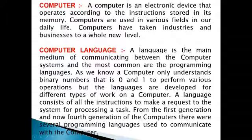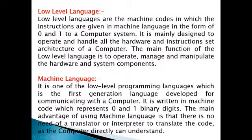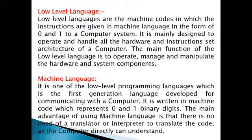From the 1st generation to the 4th generation of computers, there were several programming languages used to communicate with the computer. Low level languages: low level languages are the machine codes in which the instructions are given in the form of 0 and 1 to a computer system. Here, 0 means off and 1 means on. They are mainly designed to operate and handle all the hardware and instruction set architecture of a computer. The main function of low level language is to operate, manage and manipulate the hardware and system components.